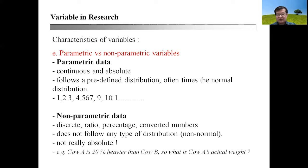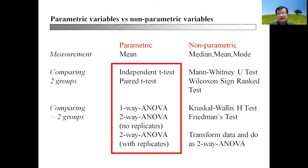It will be impossible to determine cow A's weight without knowing what is the absolute weight for cow B. Being parametric or non-parametric will also determine the type of suitable statistical methods that can be used to analyze them.